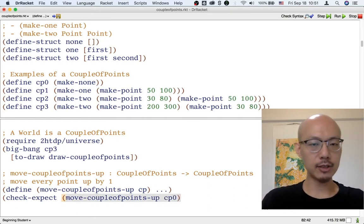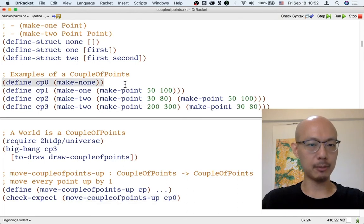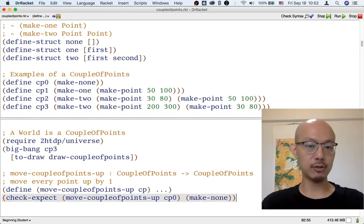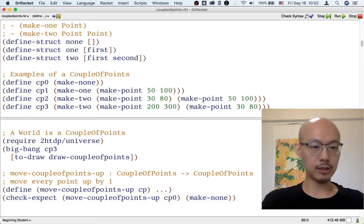So cp0 is a good example. In fact, it's the only example of the first kind of input. So if we don't have any point to start with, we should also not have any point at the end. So that's just, there's no point, so there's no point to move up. That's one example.